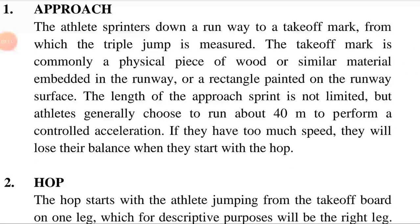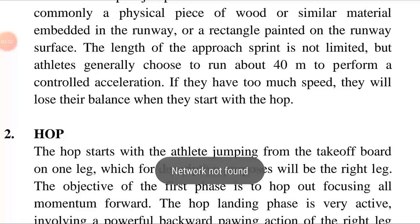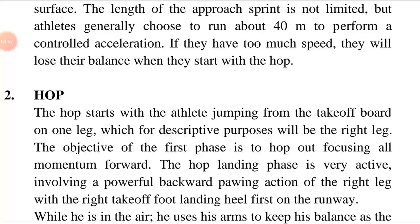The length of the approach sprint is not limited. Athletes generally choose to run about 40 meters to perform a controlled acceleration. If they have too much speed, they will lose their balance when they start with the hop, as the rate of change of position becomes too fast for the athlete to control their body balance at the initial stage.